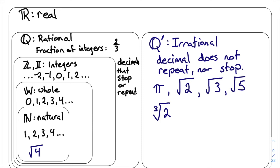The real number set is made up of the rational numbers and the irrational numbers. There are actually no real numbers that exist outside of these two groups — the entirety of the real numbers is made up of the rational and the irrational numbers. Let's take a look at a couple of numbers and see where they go.